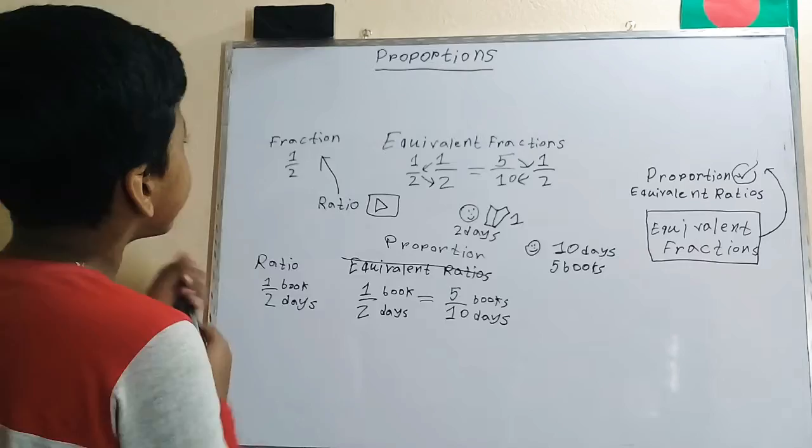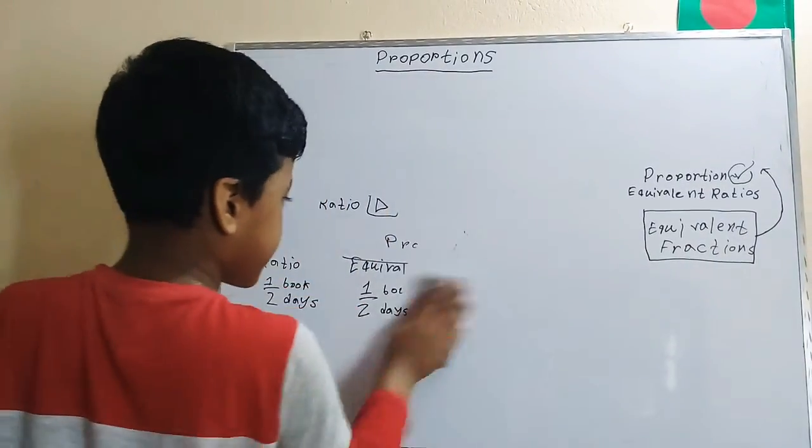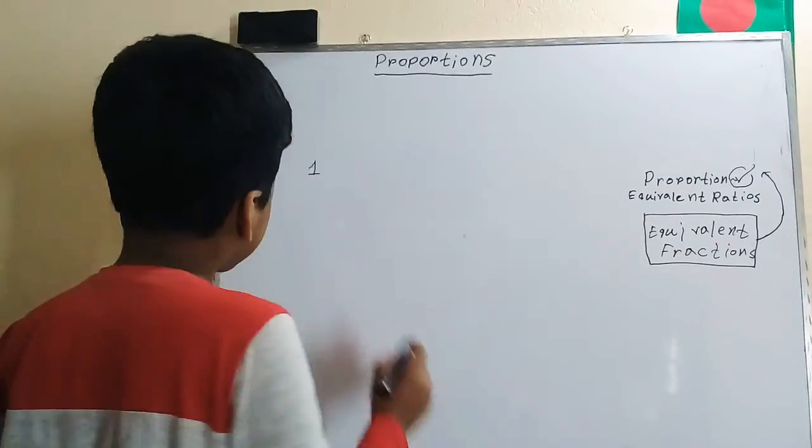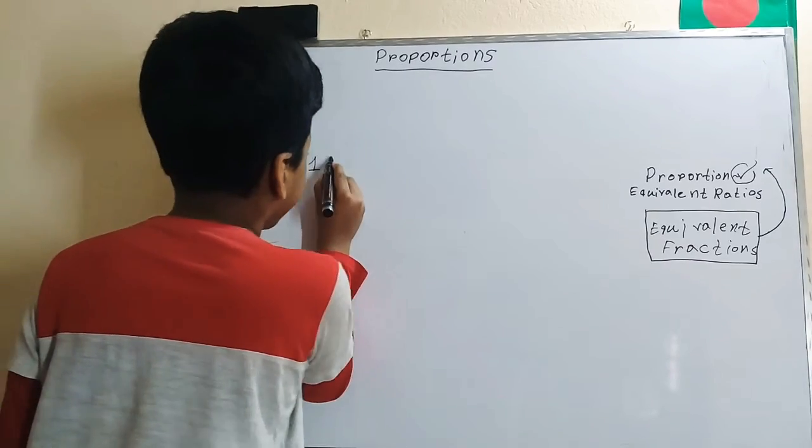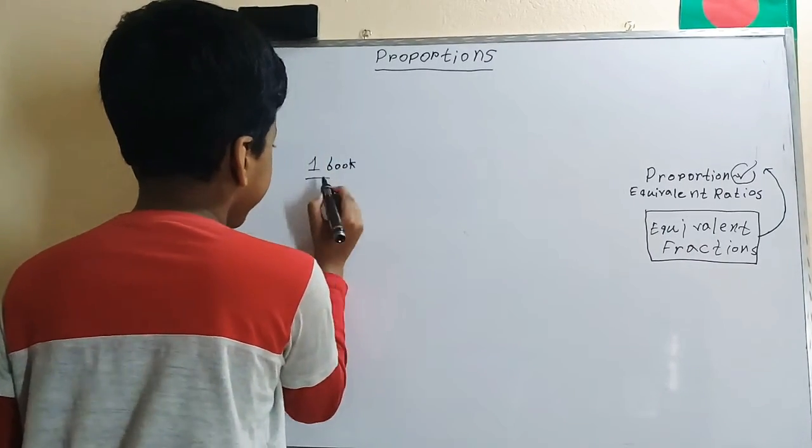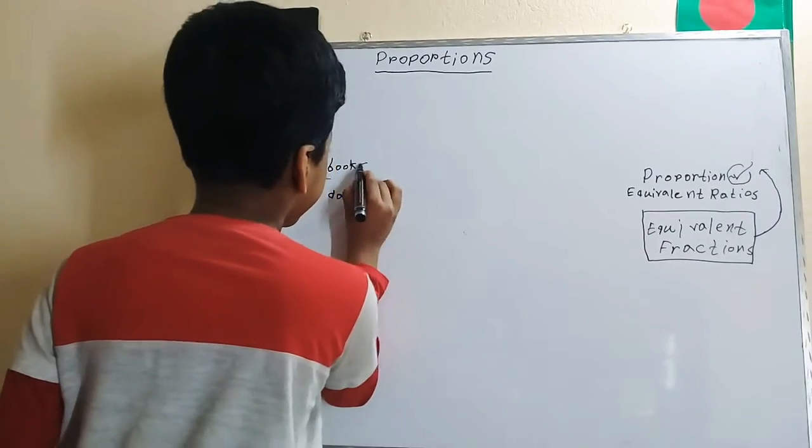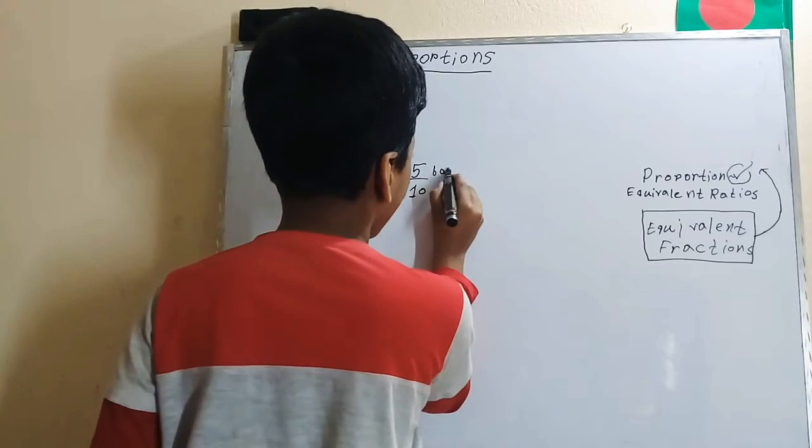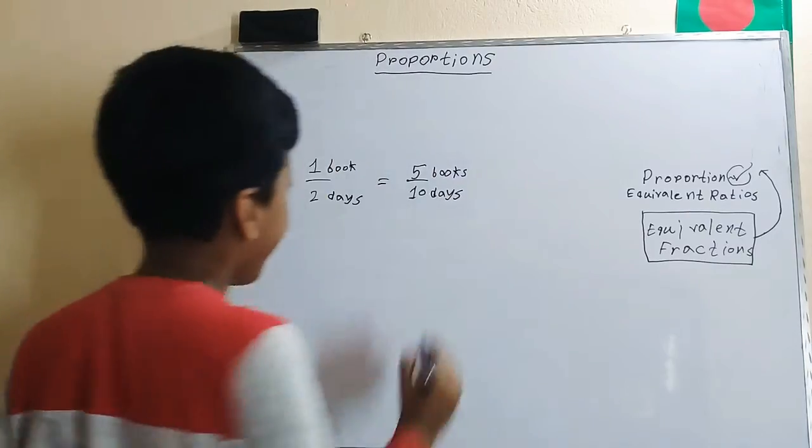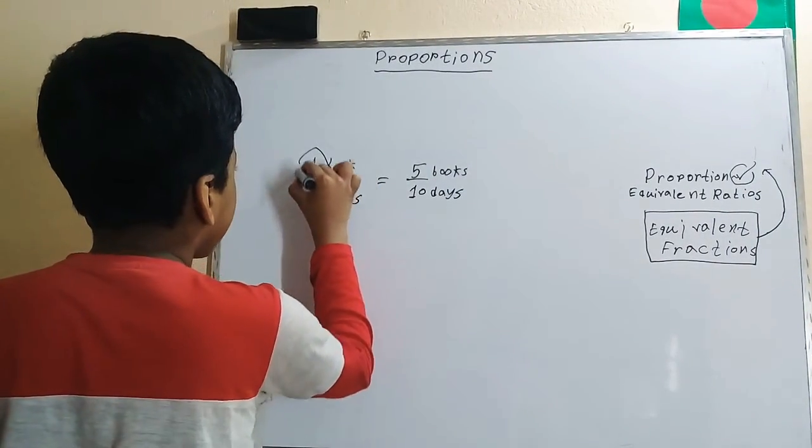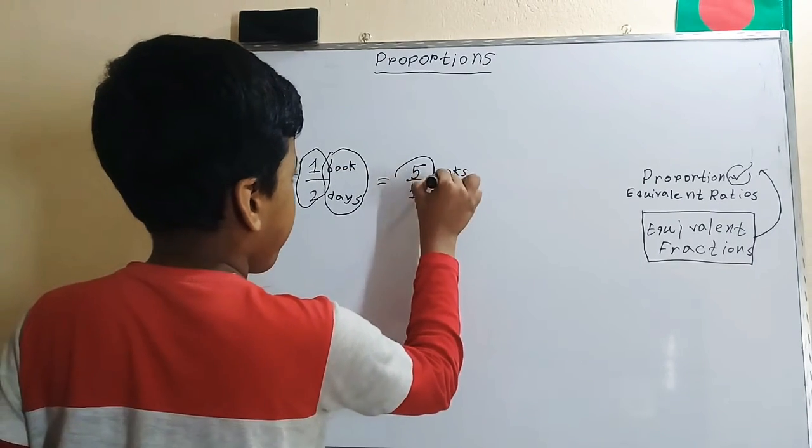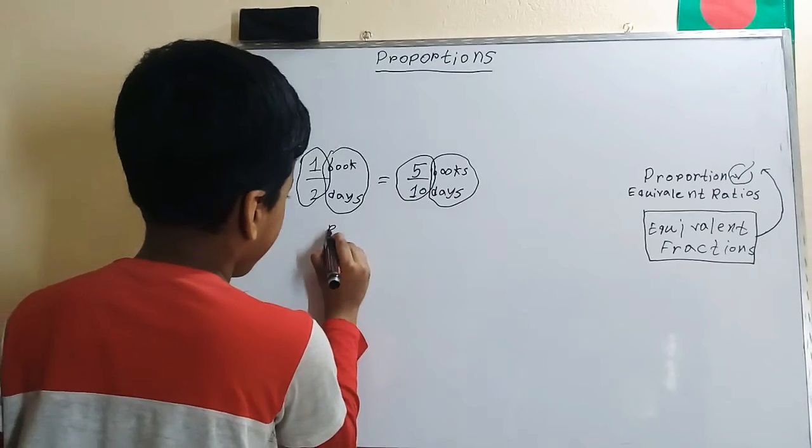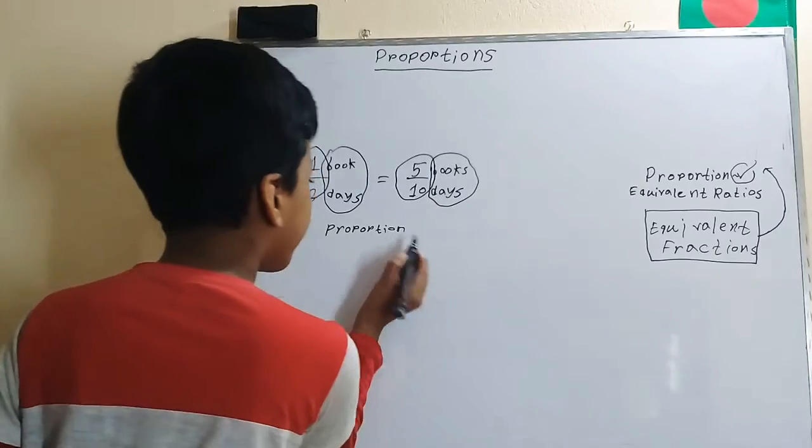A proportion is just a set of equivalent ratios. And now I'm going to tell you a very important thing about proportions. For two ratios to be equal, they don't just have to mean the same value, but they also need to have the same units.